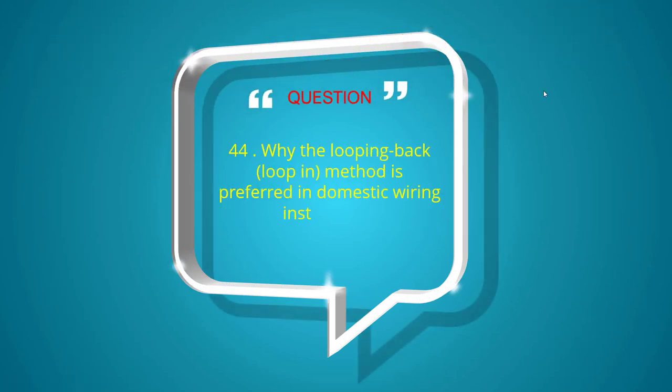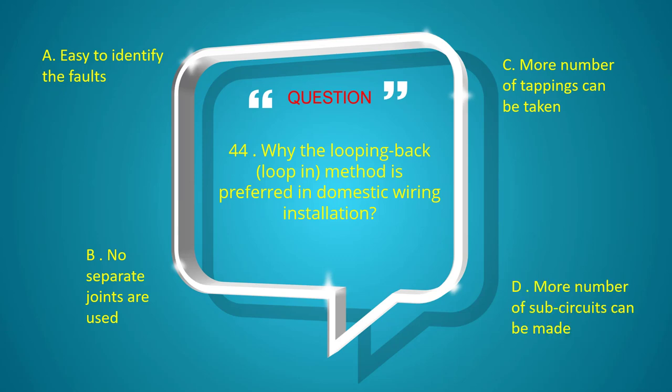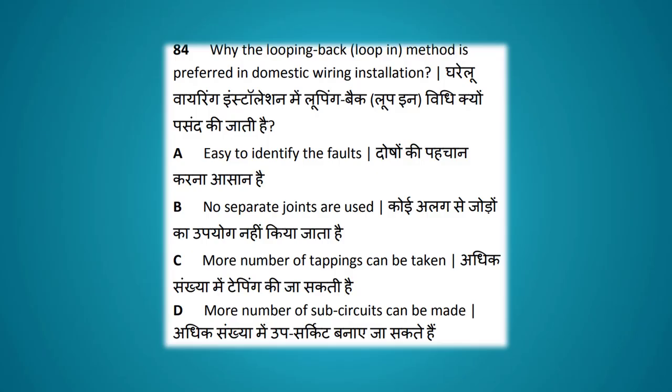Why is the looping back method preferred in domestic wiring installation? Options: easy to identify fault, no separate joints are used, more number of tapping can be taken, more number of sub circuits can be made. The answer is no separate joints are used.